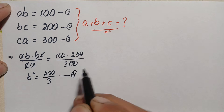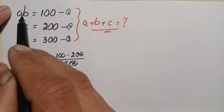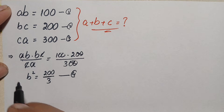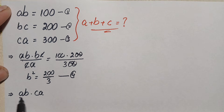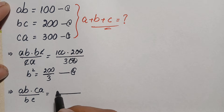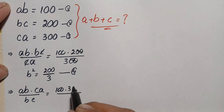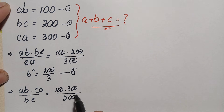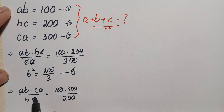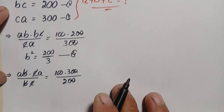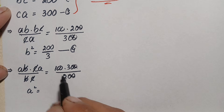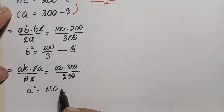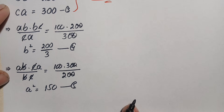This is equation number four: b squared equals 200/3. Next, we multiply equation number one with equation number three and divide the result by equation number two. This gives a·b times c·a divided by b·c, equal to 100 times 300 divided by 200. Cancelling zeros, c with c, and b with b, we get a squared equals 150. This is equation number five.